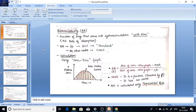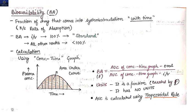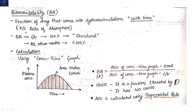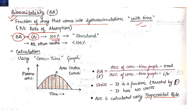Hello friends, in this video we are going to start with bioavailability. In our previous video we discussed routes of drug administration. So let's define bioavailability: the fraction of drug that comes into systemic circulation with time is basically bioavailability. It is also known as rate of absorption. If the drug is given through the IV route, then it is 100% bioavailability, and it is taken as standard.